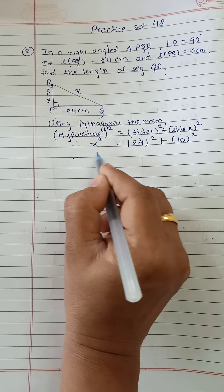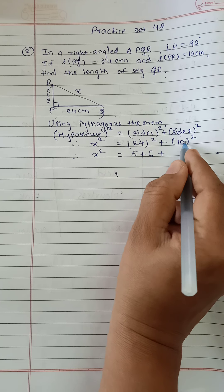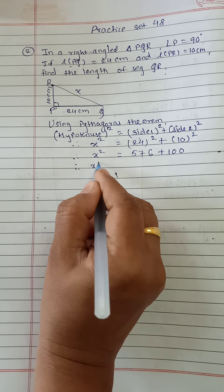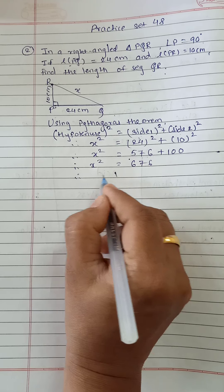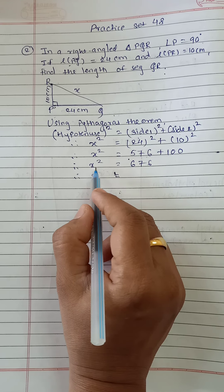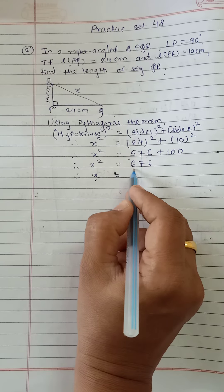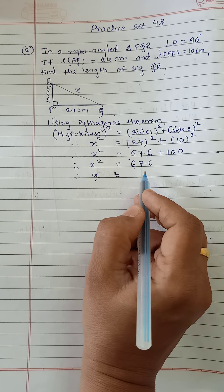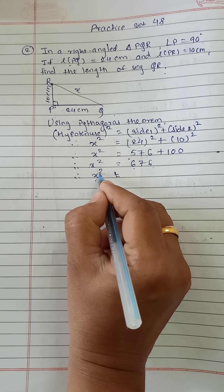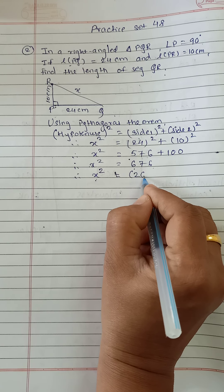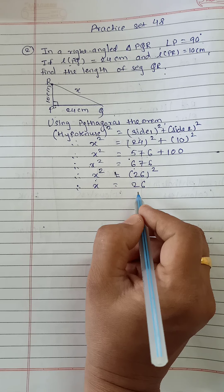Now we will find out the square values. X square equals 576 plus 100, which is 676. Therefore X is equal to the square root of 676. We can find whose square is 676: X square is equal to 26 square, therefore X is equal to 26.